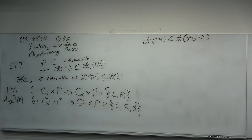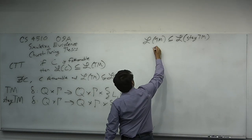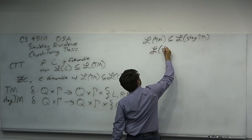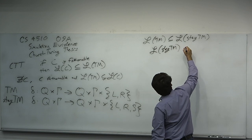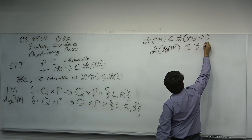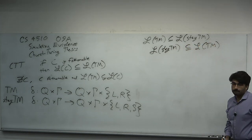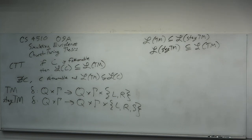We can't simply apply the Church-Turing thesis and say the Stay TM is fathomable, therefore this. We're trying to provide evidence in favor of it, so we're going to actually do the simulation. Why is L-stay-TM a subset of L-TM? The stay instruction can be simulated by two instructions on a normal Turing machine.